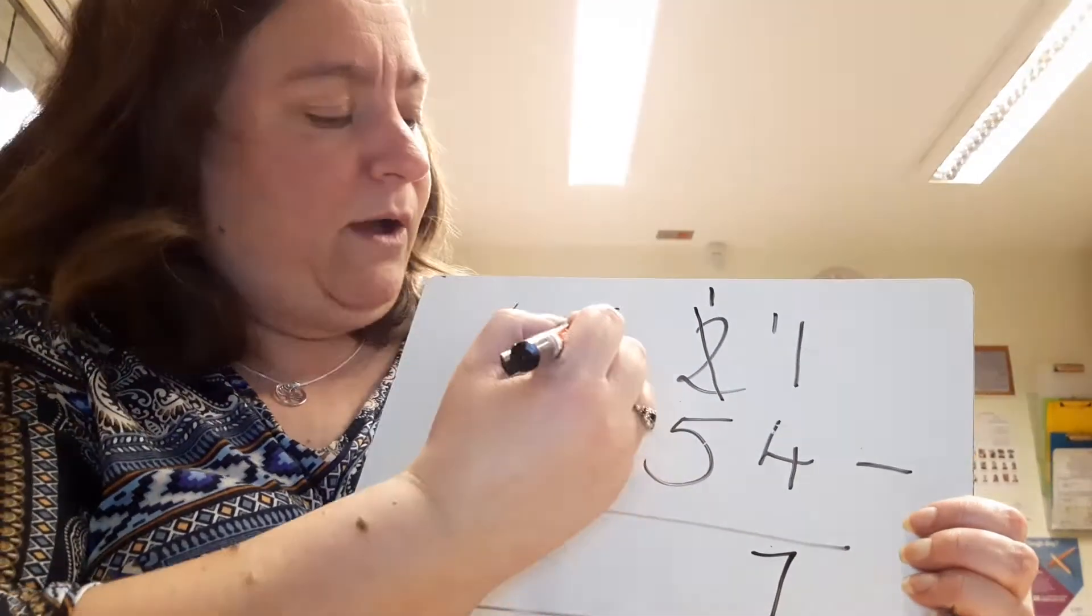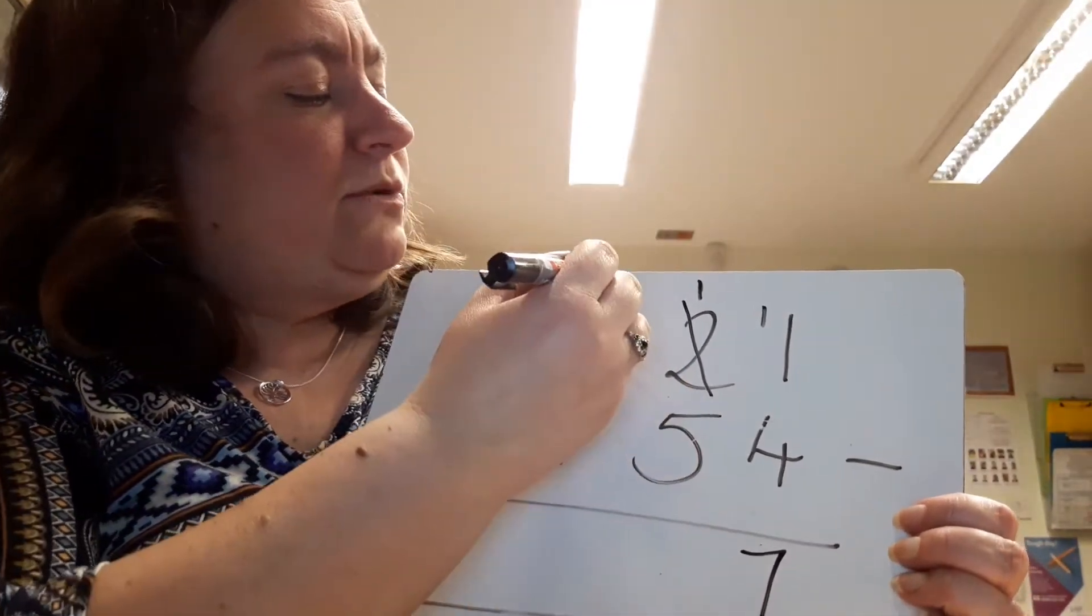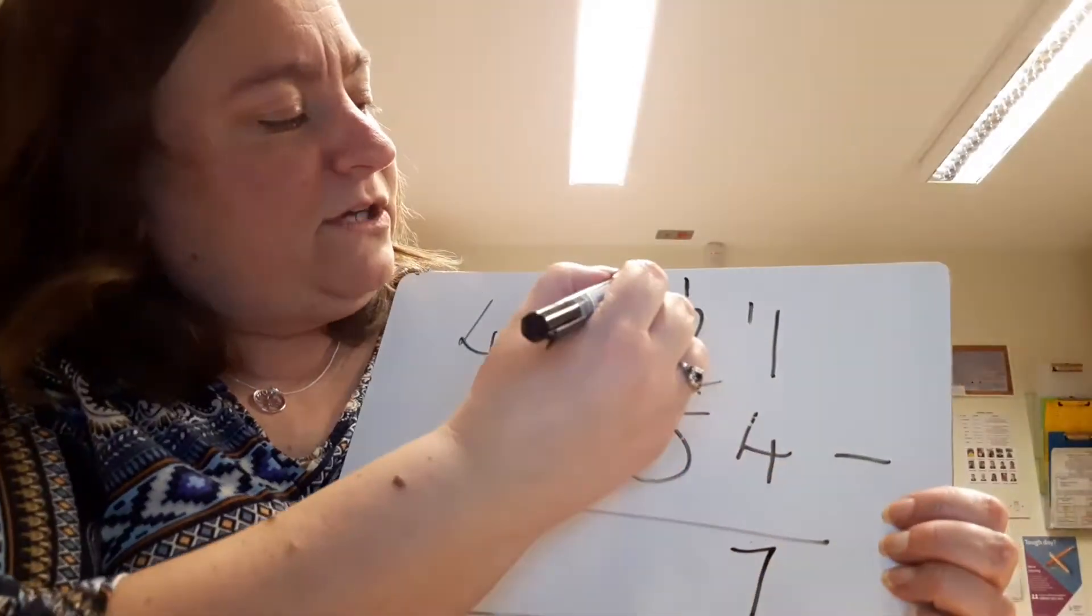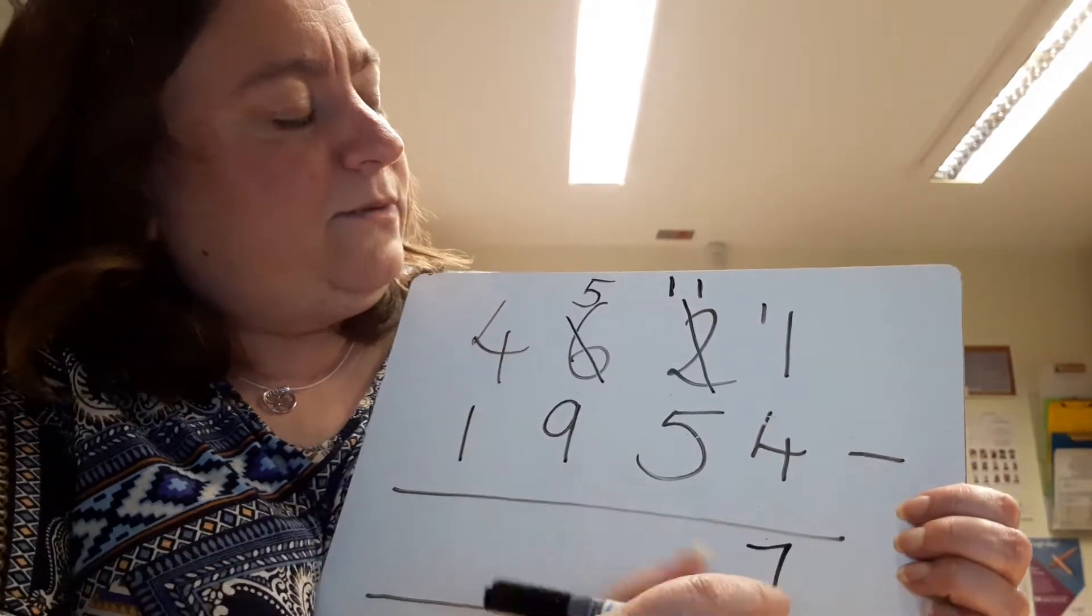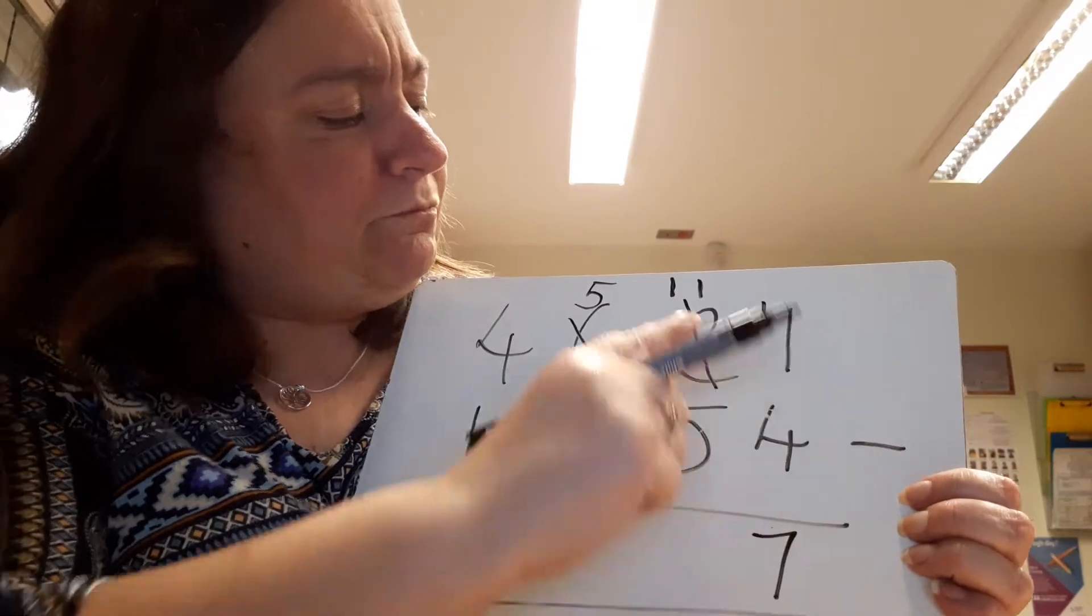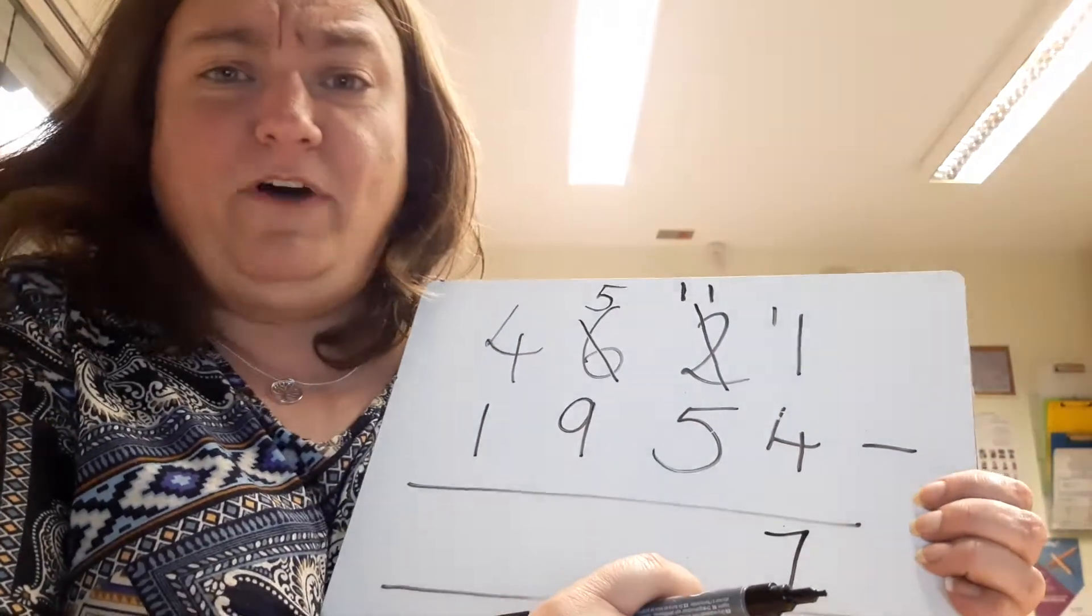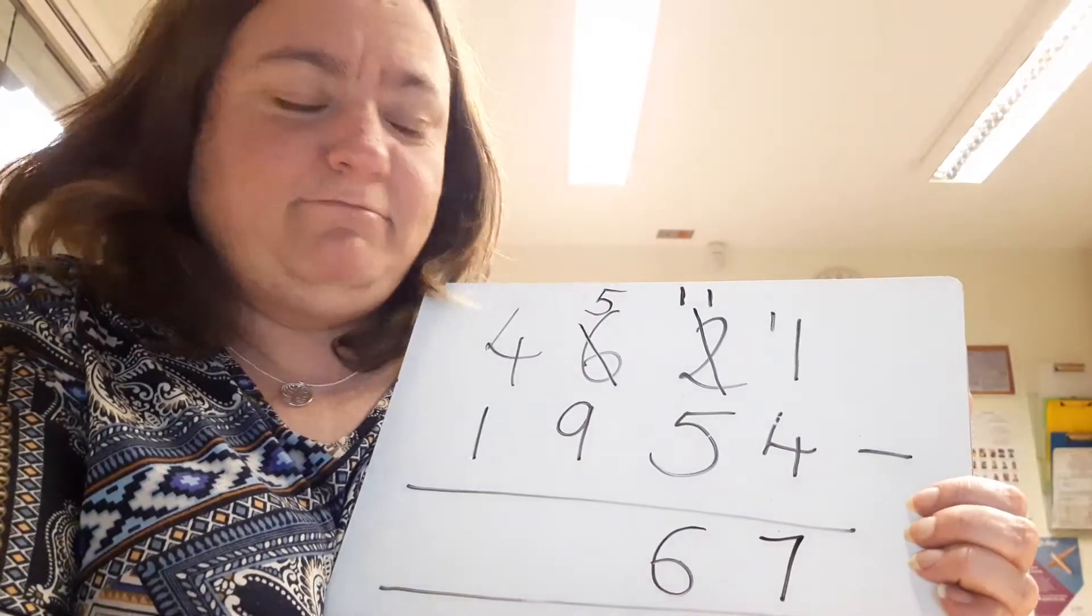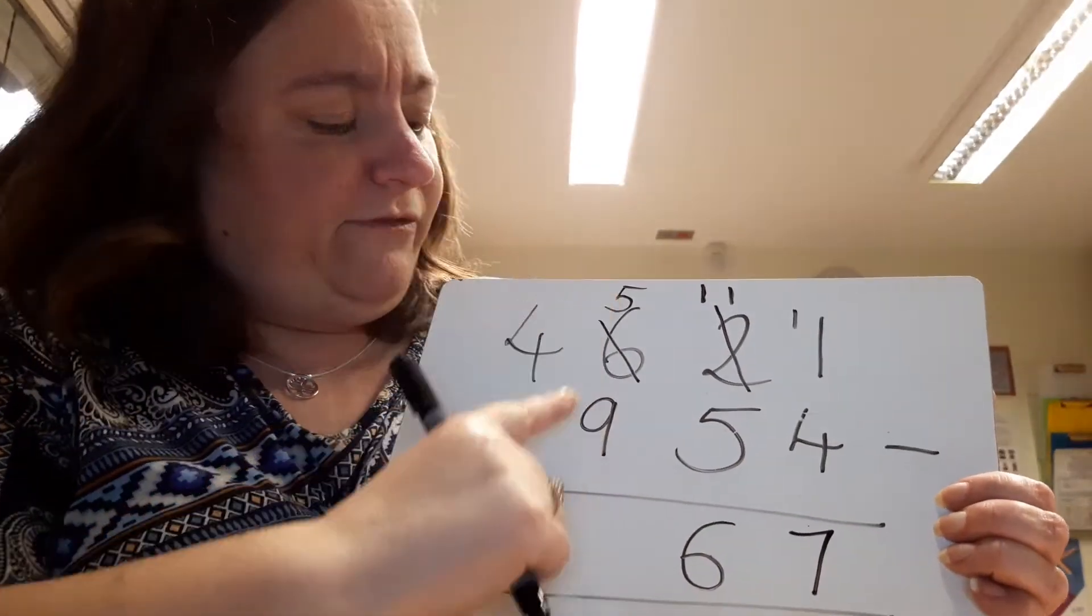ask my hundreds column for some help. He's got lots, so I'm sure he wouldn't mind becoming a 500. I'm giving one of his hundreds over here, so actually we have 110, or 11 tens if you want. So 11 tens take away 5 tens is actually 6 tens. So now we come over here.